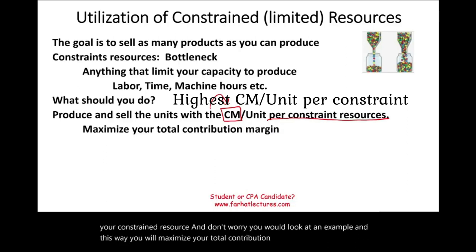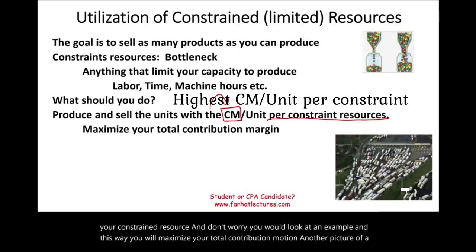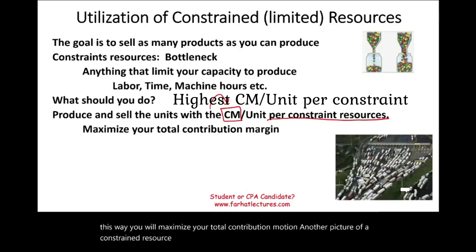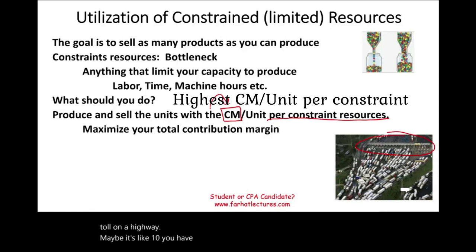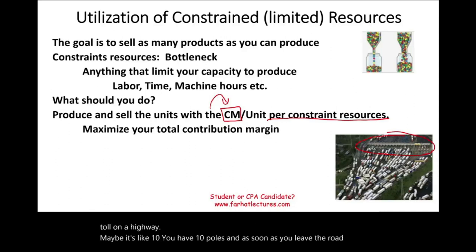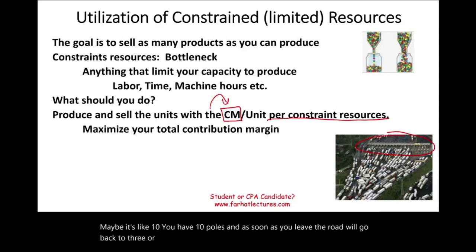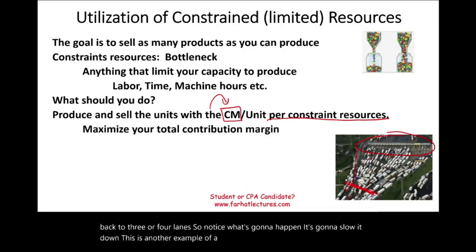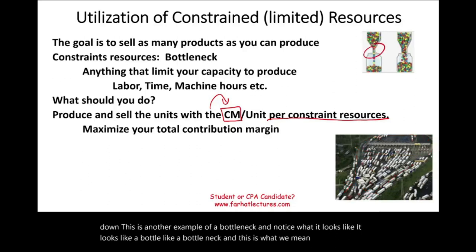Another picture of a constrained resource is traffic. Think about leaving a toll on a highway — maybe there are 10 toll lanes, but as soon as you leave, the road goes back to three or four lanes. It's going to slow things down. This is another example of a bottleneck, and notice what it looks like — it looks like a bottle neck.